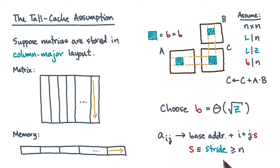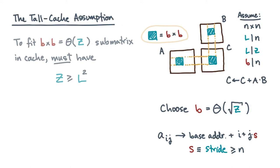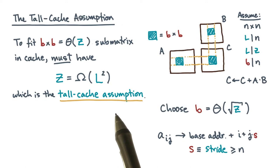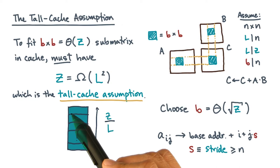Now let's take any b by b block of one of the matrices. Let's say we just want to fit this block into cache. Then it has to be the case that z is at least l squared. In the literature, this is sometimes written as the following lower bound. This condition is called the tall cache assumption. The tall cache assumption says the cache should be taller in terms of the number of lines, and then it is wide in terms of the number of words per line.